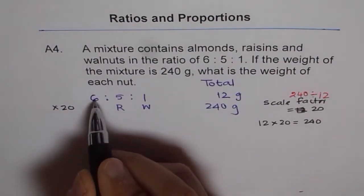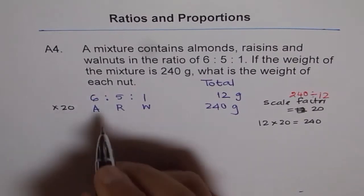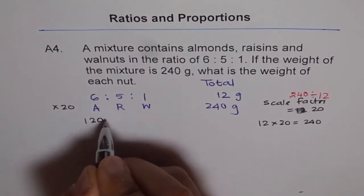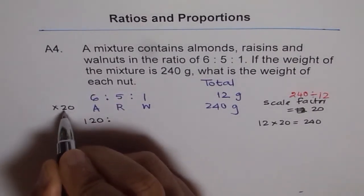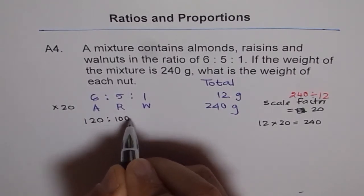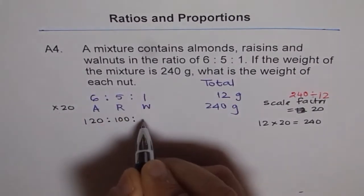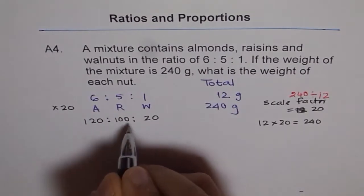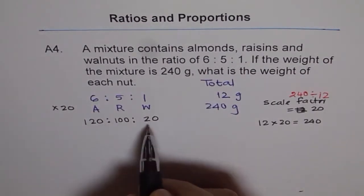6 times 20 is 6 times 2 is 12, then add a 0. So we get 120, correct? 5 times 20 is 100. And 1 times 20 is 20, right? So that is the weight of each nut.